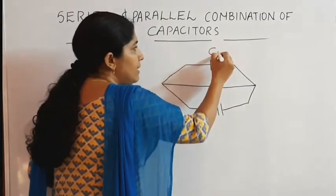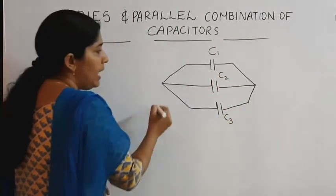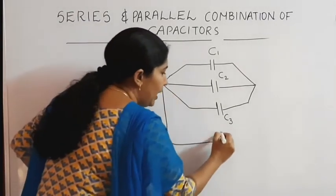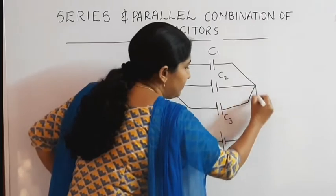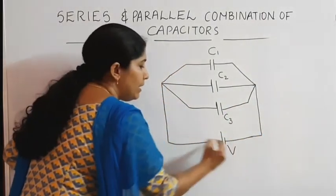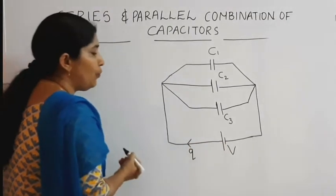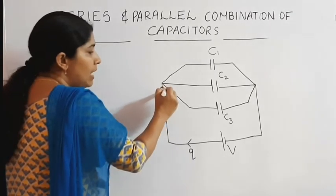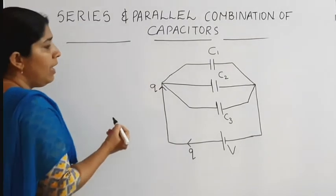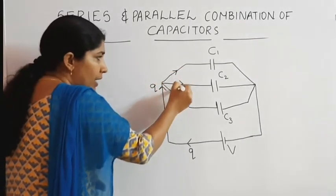Here are the capacitors C1, here C2, here it is equal to C3. These are connected to a voltage source V. Now the circuit is closed. When charge begins to flow through the circuit and reaches this point, the charge flows through this branch, this branch, and this branch.